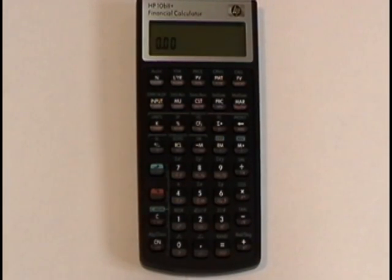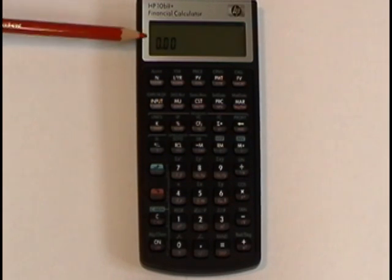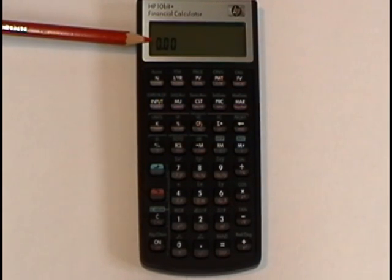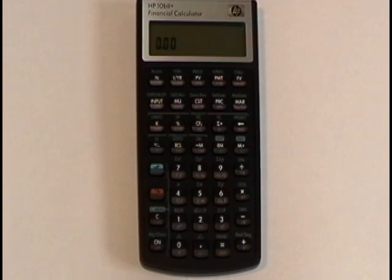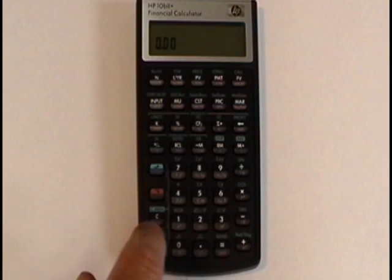The next thing we need to know about on the HP 10b2 is something referred to as significant places. Significant places are the number of zeros that appear to the right of the decimal. So currently the calculator is displaying two significant places. In other words, the cents. Now if I want to change that, let's say to four significant places, here's how I do it.